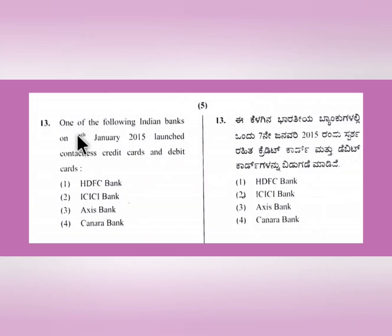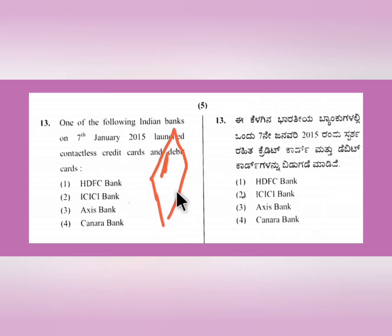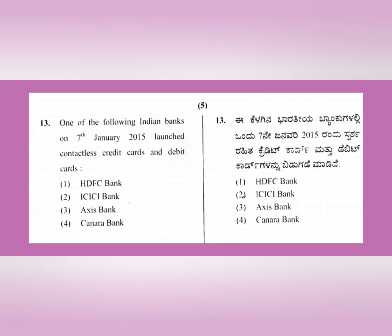Question 13: One of the following Indian banks, on 7th January 2015, launched contactless credit cards and debit cards. These cards have a chip instead of magnetic strips, making processing easier. The answer is ICICI Bank - option number 2 - which launched these contactless cards.